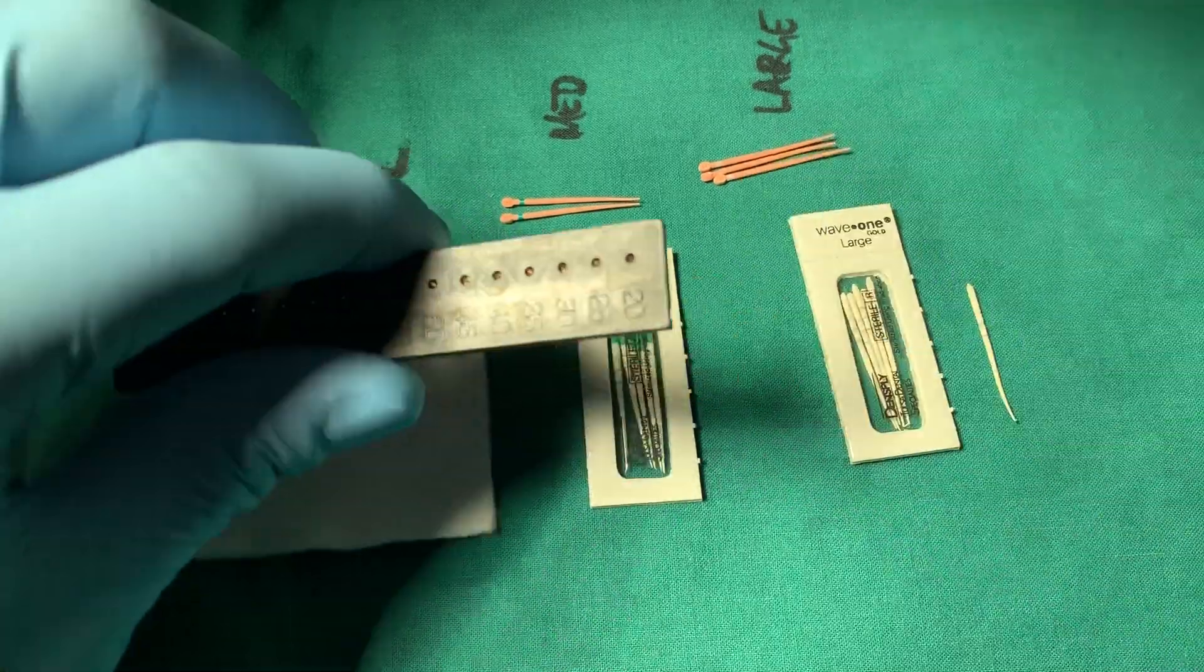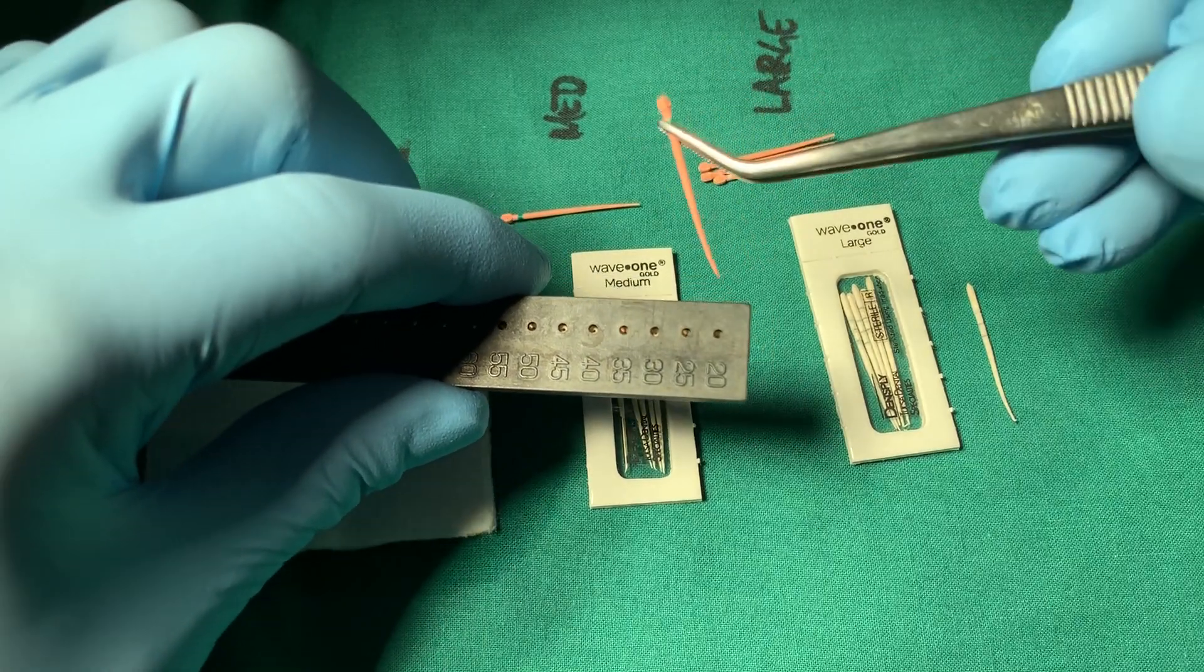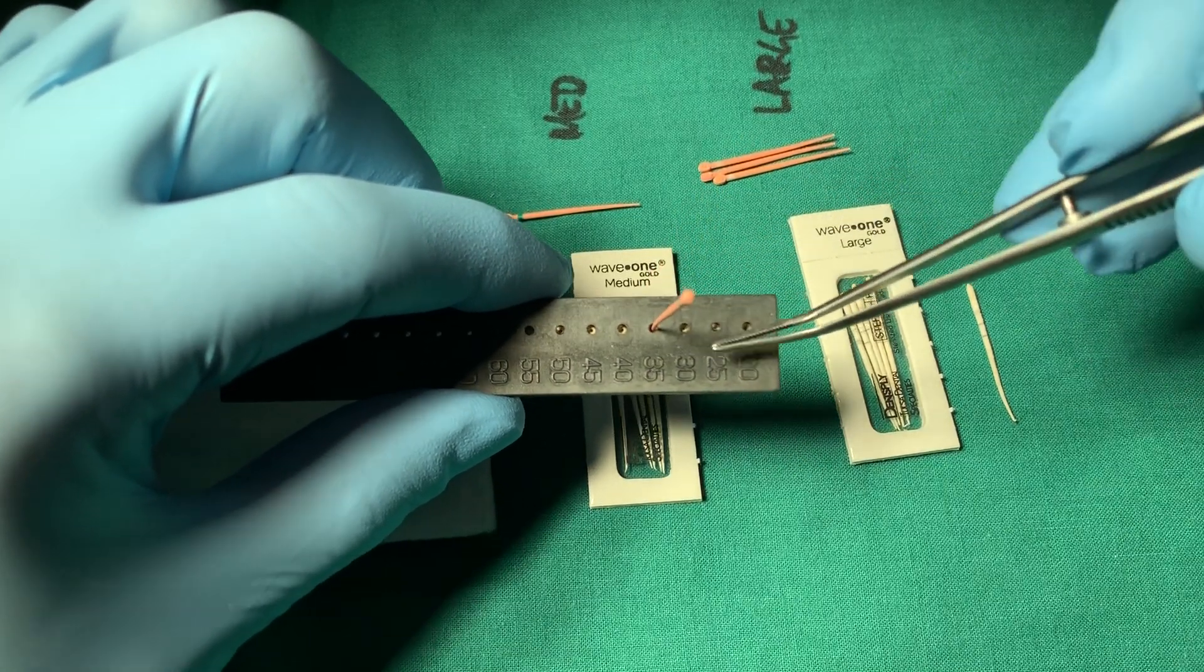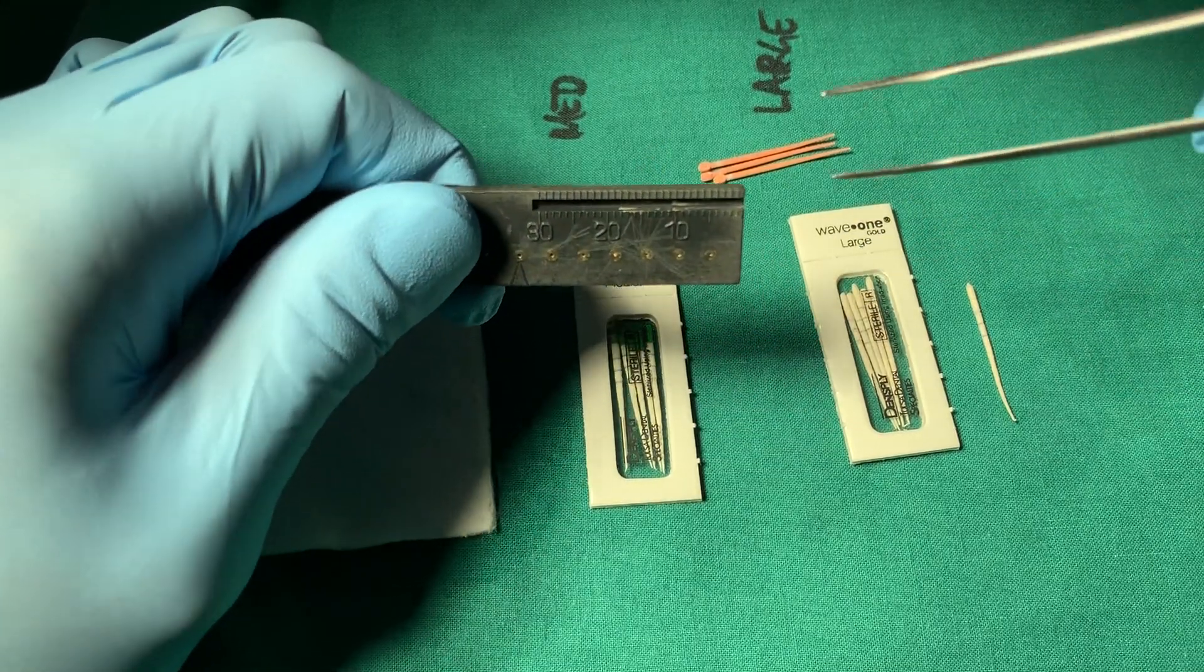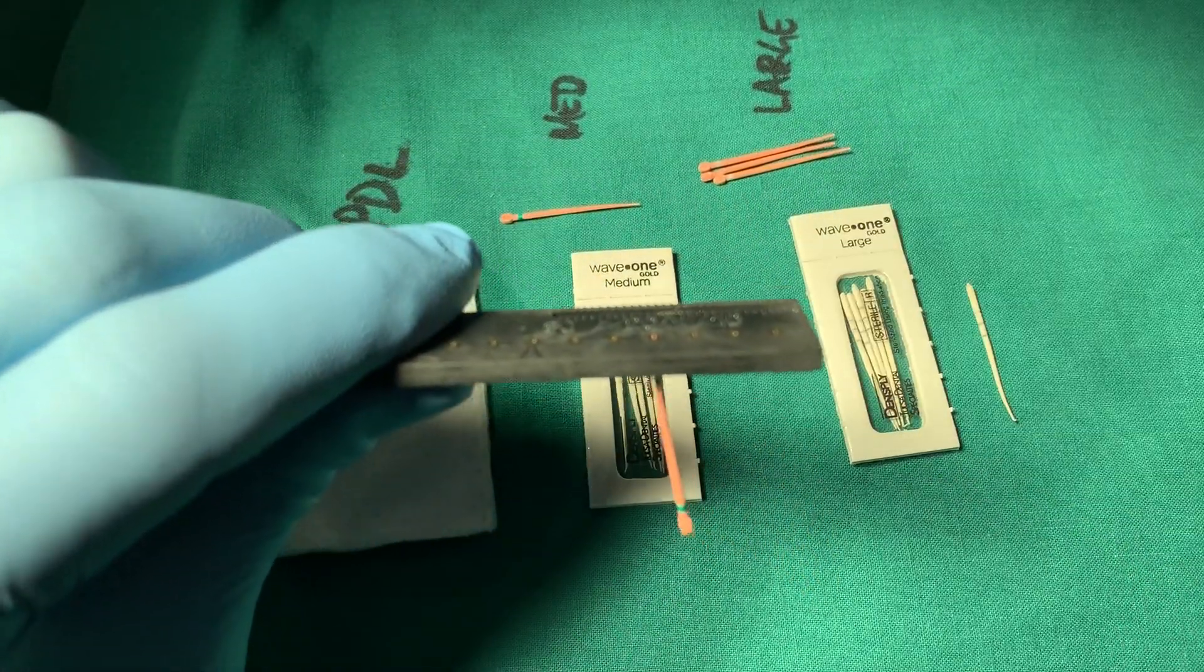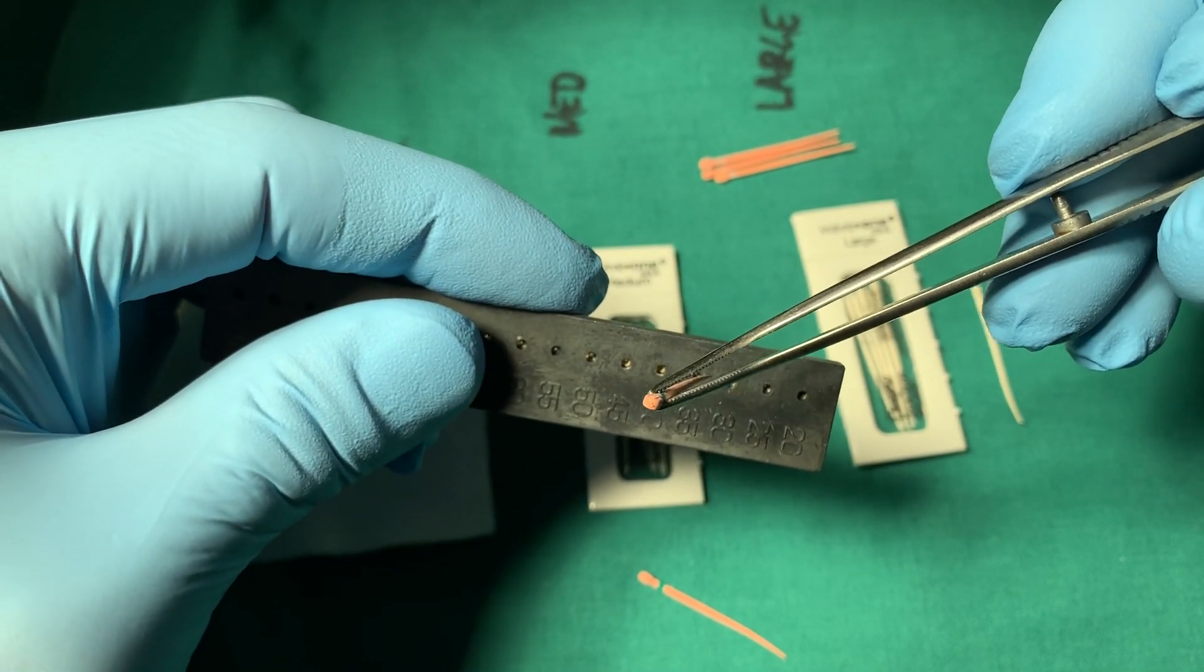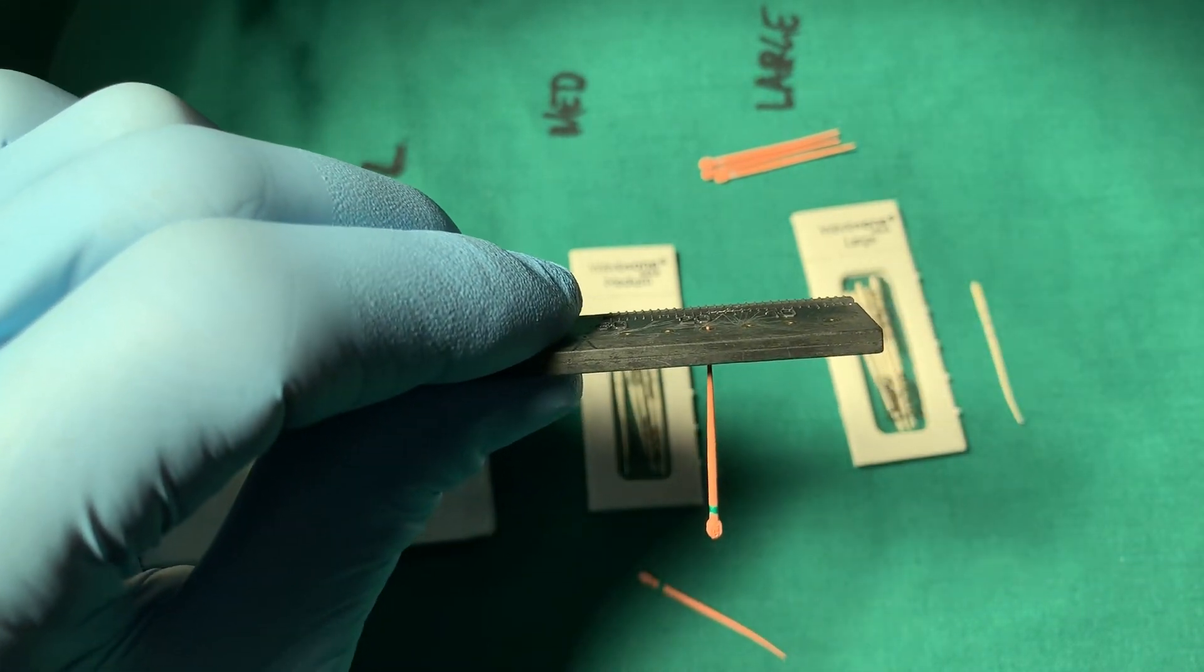This might be different for your system you're using. So the first thing we're going to do is let's make sure that our gutta percha points are actually what they say. So a medium size, a medium tip is a 35 in the Wave 1 Gold system. So let's take a look. Let's place this in our gutta gauge, which is a 30. This is our gauge is the tip of the gutta percha. And you can see it's pretty much flush if we get it right there. So this is how we know that our gutta percha is exactly fit at 35.